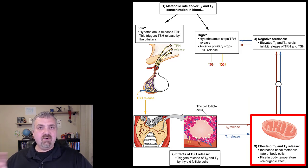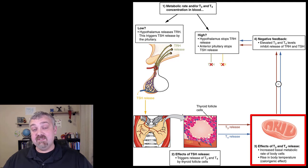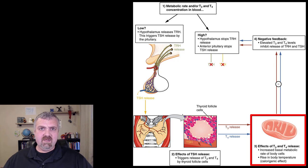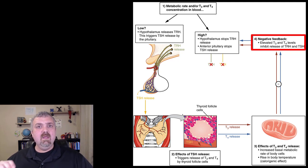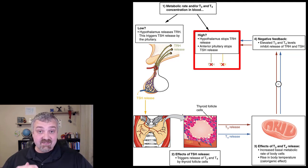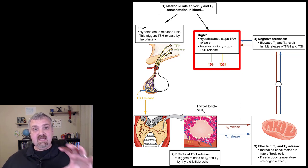Now you have a bunch of thyroid hormones doing their job. The higher levels of T3 and T4 are going to tell the hypothalamus, okay, we're good — we don't need any more thyroid hormone right now. So the hypothalamus will stop producing thyrotropin releasing hormone, which will tell the pituitary gland to stop producing thyroid stimulating hormone. The end result is that you keep your thyroid hormones pretty level.